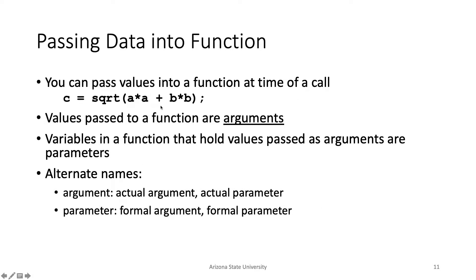Let's talk about the arguments or parameters of functions. In our example, we passed radius into the volume function. What can you actually pass into a function? Pretty much anything as long as it evaluates to the right type. The volume function expects a double, so as long as we pass in a double or something that evaluates to a double — like a times a plus b times b — we're fine. You can have a function call in there, a complex expression, pretty much anything, as long as it evaluates to the right type.